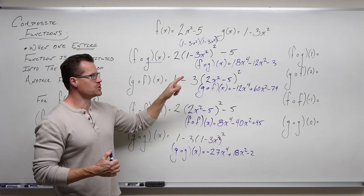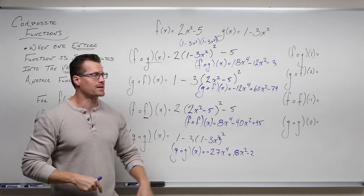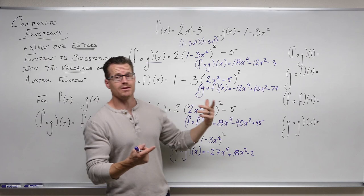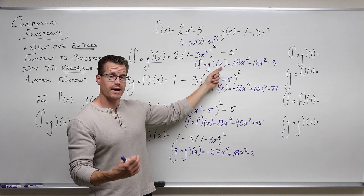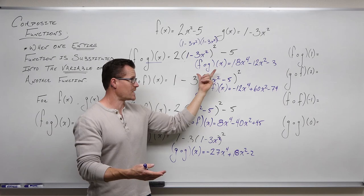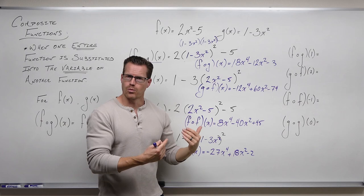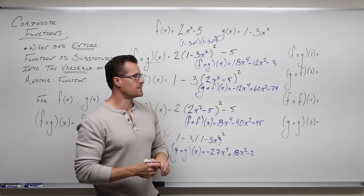Now let's work on evaluating compositions numerically. There are two ways to do this. For f of g of 1: the first way — the easier, less-thought-required way — is to identify which composition you have and just plug the value in. We already worked out that f of g of x equals 18x⁴ minus 12x² minus 3. If I change x to 1, I get 18 minus 12 minus 3. That's 6 minus 3, which equals 3.